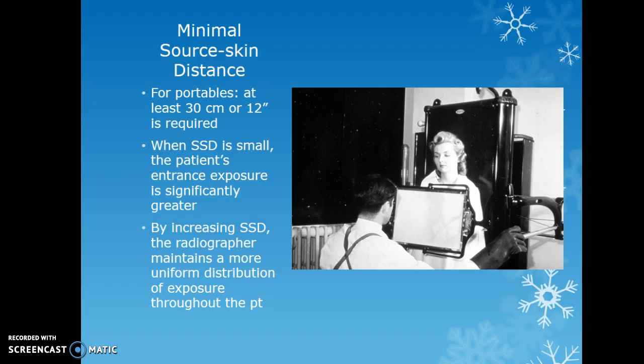For source-to-skin distance on portables, at least 30 centimeters or 12 inches is required. The main concern arises in the NICU with premature infants — if they are in a crib with a fixed top, you may need to move them to a Mayo stand or different crib to achieve sufficient distance, because you cannot be closer than 12 inches.